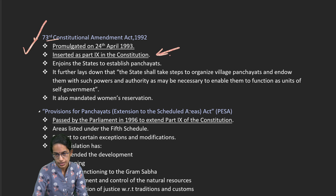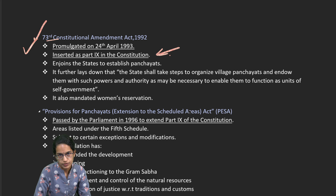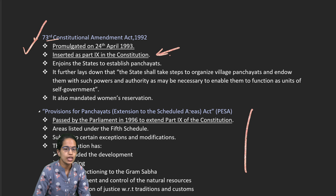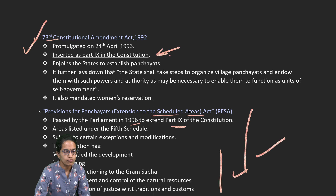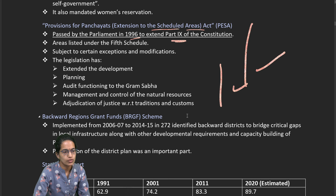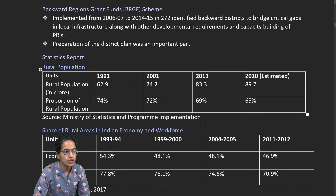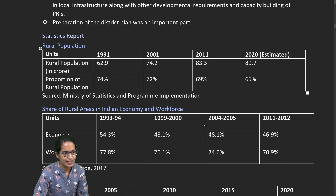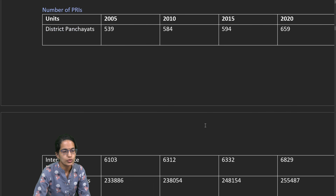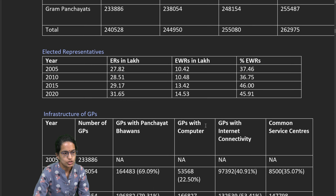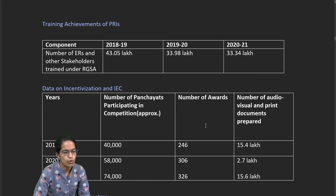The 73rd Constitutional Amendment Act applies to rural areas and the 74th to urban areas. Then we have PESA — the Panchayats Extension to Scheduled Areas Act — enacted in 1996 under Part 9 of the constitution. It aims to extend the development, planning, and auditing functions of the Gram Sabha, their management and control. Statistics on rural population share, workforce, various Panchayati Raj institutions, and elected members are covered and available in the handout.